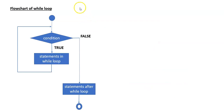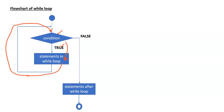Coming to the flowchart of the while loop: initially, we give a condition. If the condition is true, then we enter into the while loop and the entire body of the while loop is executed. The control then comes back to the condition part. If the condition is true again, the statements execute again. This cycle is repeated till the condition becomes false. Whenever the condition becomes false, the program control moves out of the while loop, and whatever statements are left after the while loop are executed.